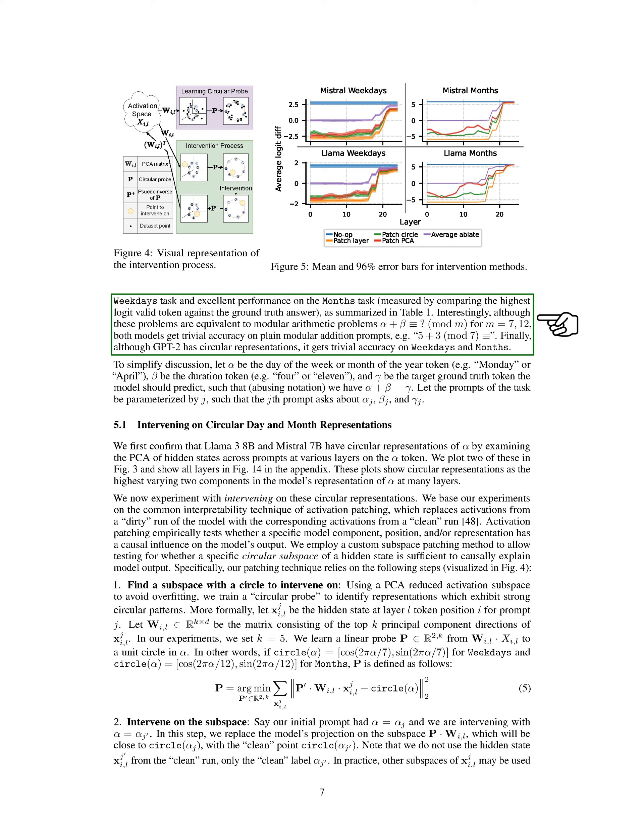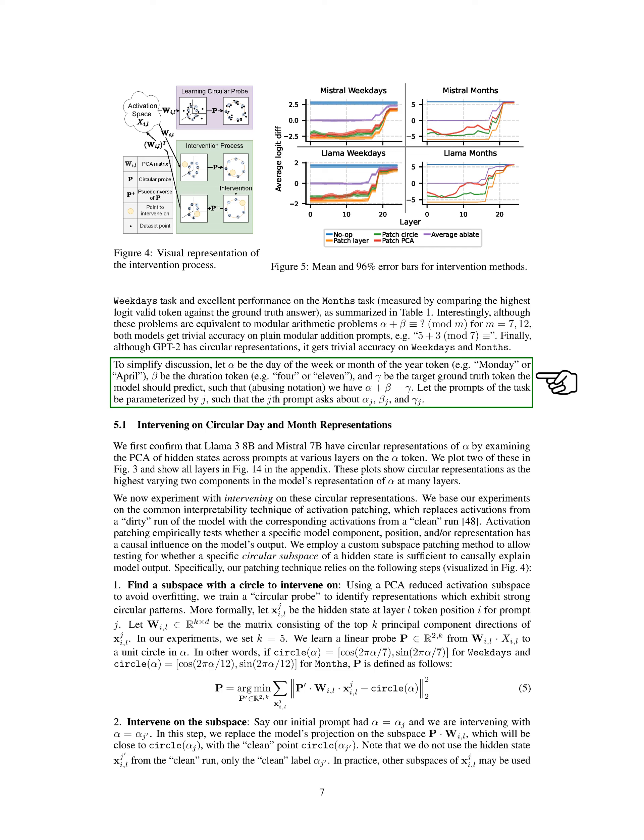Interestingly, although these tasks are essentially modular arithmetic problems with M equals 7 or 12, both models struggle with basic modular addition prompts like '5 + 3 mod 7'. Surprisingly, GPT-2, despite having circular representations, performs poorly on the weekdays and months tasks. To simplify our discussion, we define alpha as the day of the week or month of the year token, beta as the duration token, and gamma as the target token the model should predict, such that alpha plus beta equals gamma. Each task prompt is denoted by J, where the J-th prompt involves alpha_J, beta_J, and gamma_J.